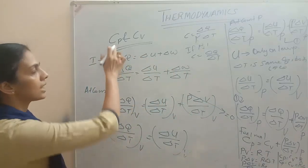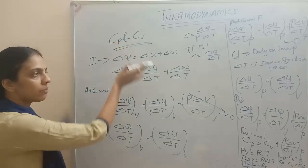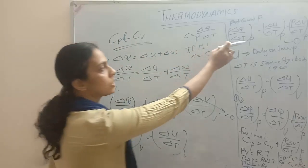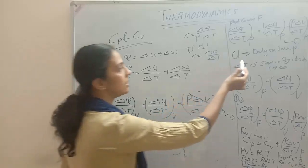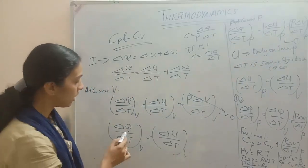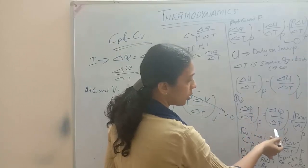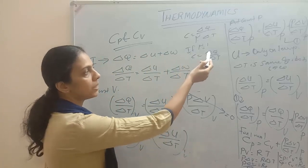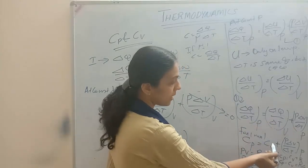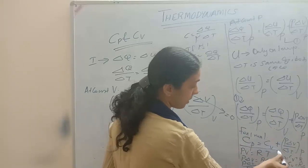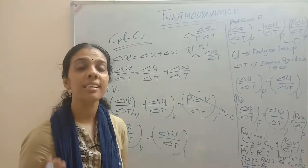This is the relation connecting Cp and Cv: Cp minus Cv equals R. This is a very important derivation. We started from the first law of thermodynamics, divided by delta T, used the fact that internal energy depends only on temperature, and applied the ideal gas equation to get R on the right-hand side.